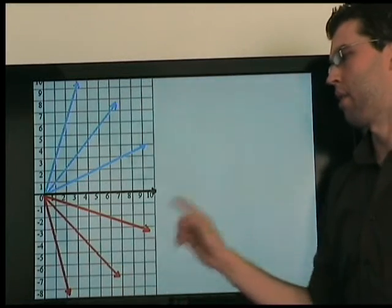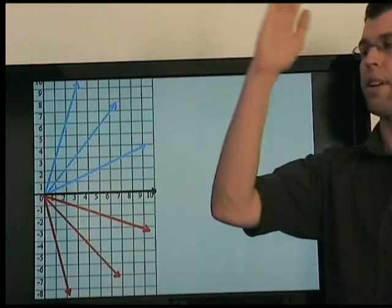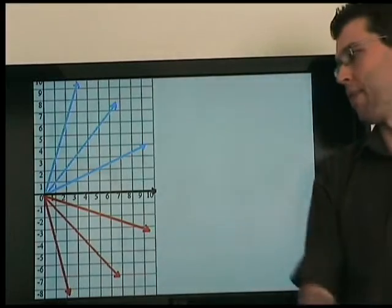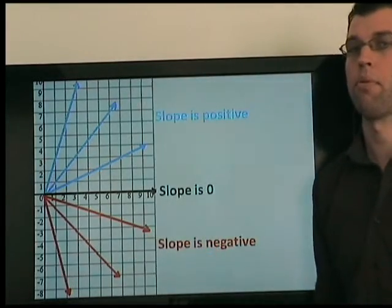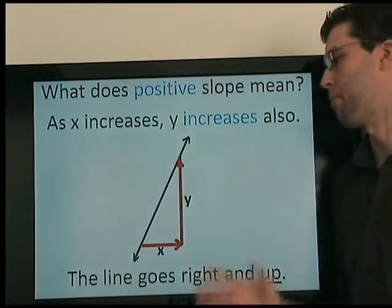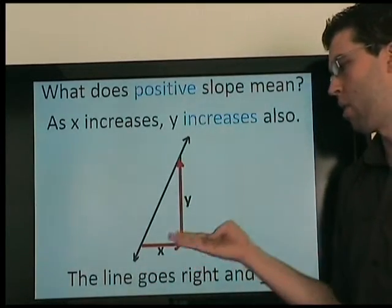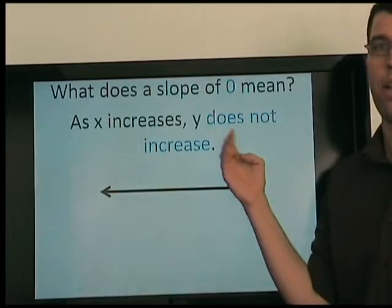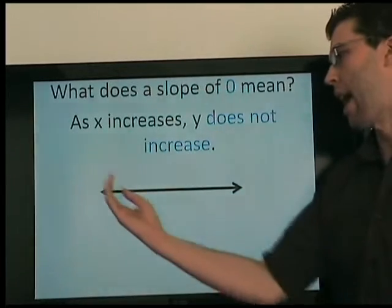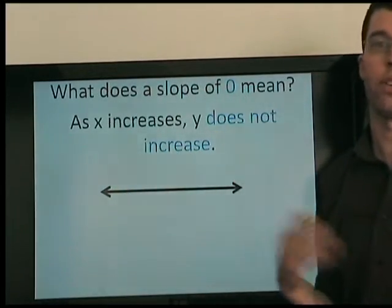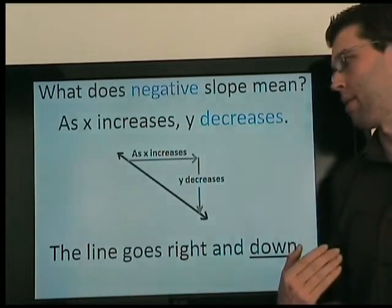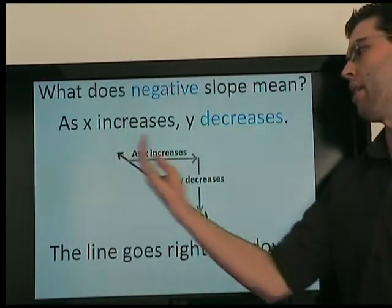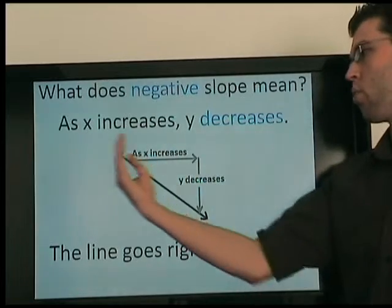Let's consider these lines down here. Well, here the slope is positive. They decrease, decrease, decrease — we get to 0. If we keep decreasing, what's less than 0? Negative. So the slopes down here have negative slope. Positive slope means as x increases, y increases also — in other words, we go right and up. Zero slope means as x increases, y does not increase nor decrease. Negative slope means — negative just means opposite — so as x increases, y decreases. We go right and down.